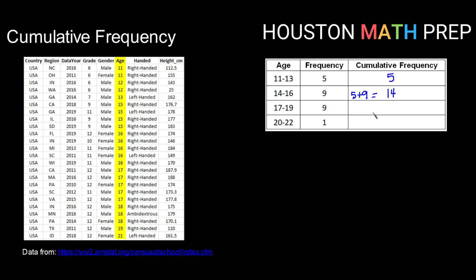The cumulative frequency for the class 17 to 19 asks how many of our data values fall between 11 and 19. So again, we will take our frequencies from those three classes and add them up. 5 plus 9 plus 9 should give us 23. So our cumulative frequency for the class 17 to 19 is 23.